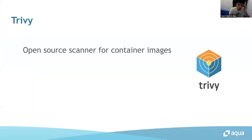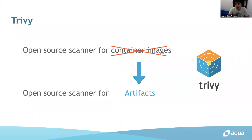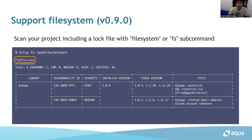Trivy used to be an open-source scanner for container images, but recently Trivy expanded to become an open-source scanner for artifacts. Now Trivy supports multiple formats. From version 0.9, Trivy supports file system scanning — including the host machine, virtual machine, and unpacked container image file systems. Using the filesystem subcommand, Trivy scans your project including lock files such as Pipfile.lock for Python, Gemfile.lock for Ruby, and composer.lock JSON for PHP, and looks for vulnerabilities based on those lock files.